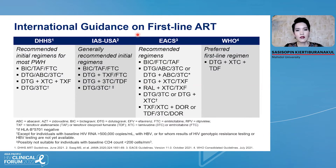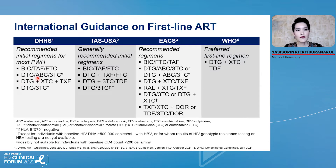This slide shows international guidelines on first-line ART. The IAS-USA guideline, European EACS guideline, and WHO guideline all recommend integrase inhibitors for the first-line ART for most people living with HIV — especially dolutegravir and bictegravir. You can see all these recommended regimens. However, for European guidelines, they also include doravirine as one of the regimens for naive patients.